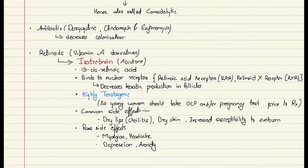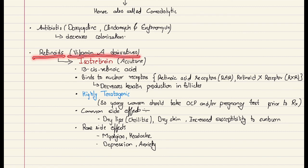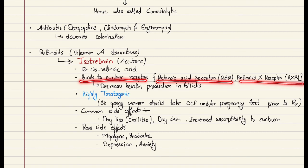For severe acnes, we give retinoids or vitamin A derivatives. One common example is isotretinoin, sold under the trade name Accutane. It's also known as 13-cis-retinoic acid. Isotretinoin binds to nuclear receptors, the RAR or retinoic acid receptors and RXR, retinoid X receptor, and decreases the production of keratin in the follicles. When there is decreased keratin production, the chances of getting a plug in the duct is less. We should be very careful while using this drug because it's very highly teratogenic.